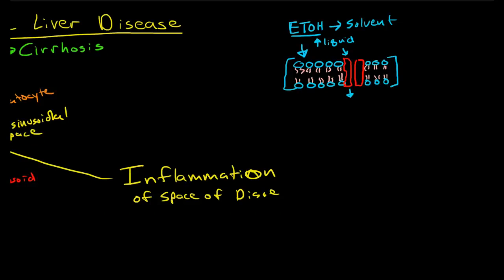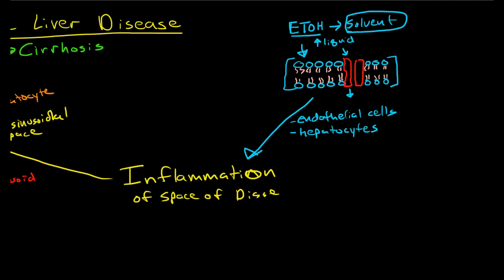But in any case, alcohol acting as a solvent to the phospholipid membrane disrupts the cells and cellular processes and leads directly to inflammation in the space of Disse because of its effects on the endothelial cells in the sinusoids and the hepatocytes directly. So that's number one, alcohol acting as a solvent to the phospholipid membrane leading to inflammation.